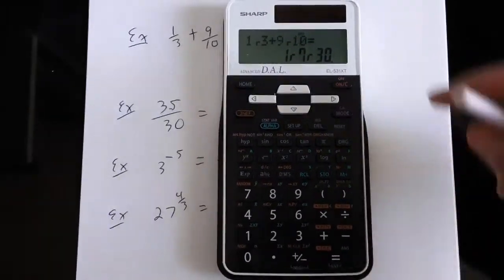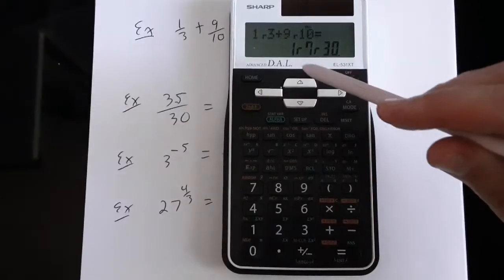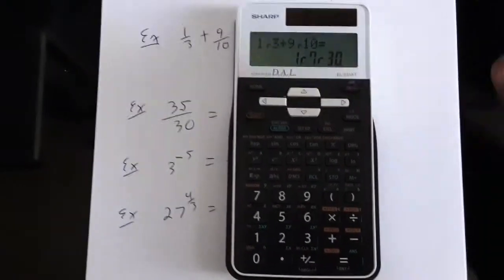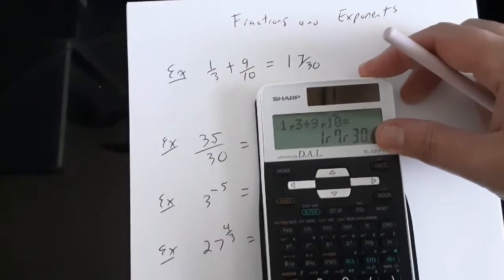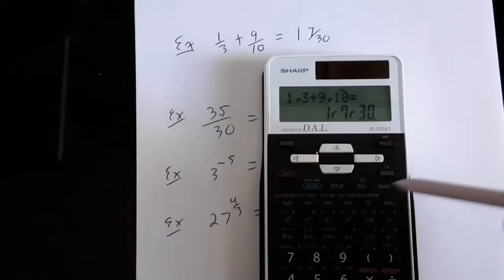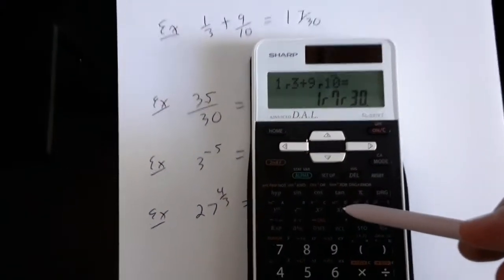Now, the answer that it's given me here, I would interpret this, 1, the little hook, 7 with the little hook, and 30. That is the mixed number 1 and 7 thirtieths. If we're thinking about turning that into an improper fraction...